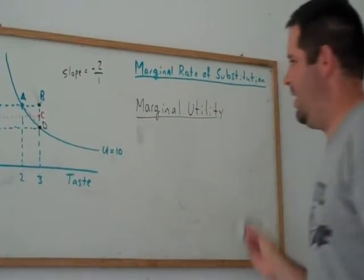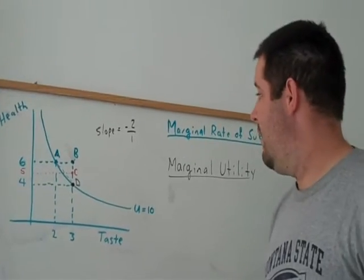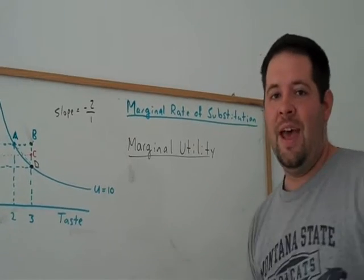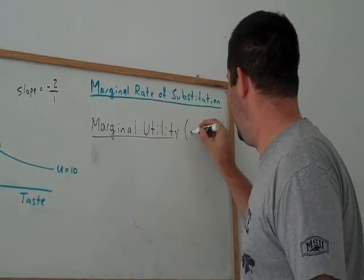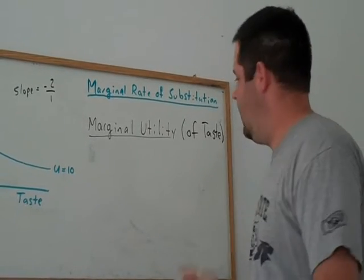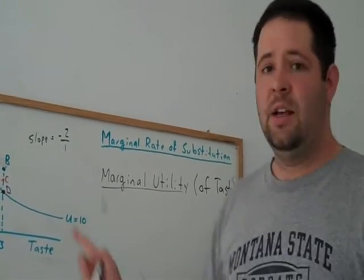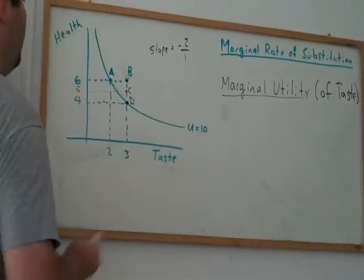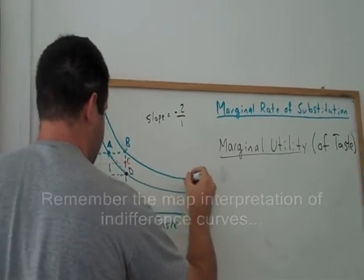Now, marginal utility tells me how much additional utility I get if I get one more unit of a particular good. And actually, I can't just say marginal utility. I have to say marginal utility of what? In this case, I'm going to define it in terms of marginal utility of taste. In other words, how much more utility do I get if I get one more unit of taste?